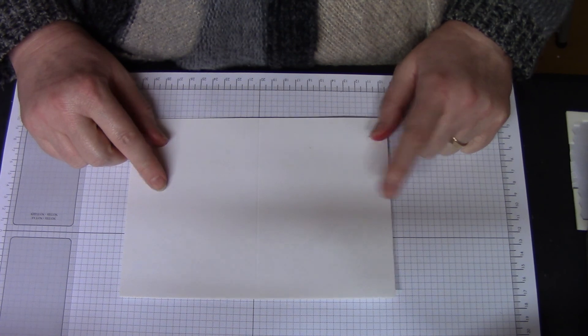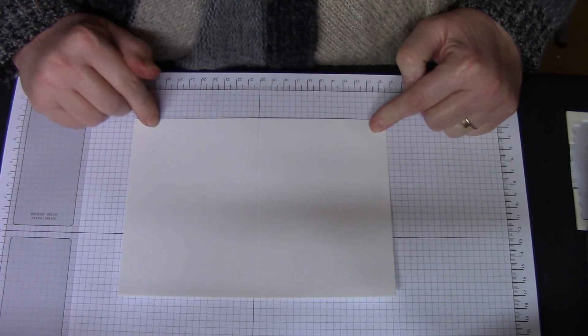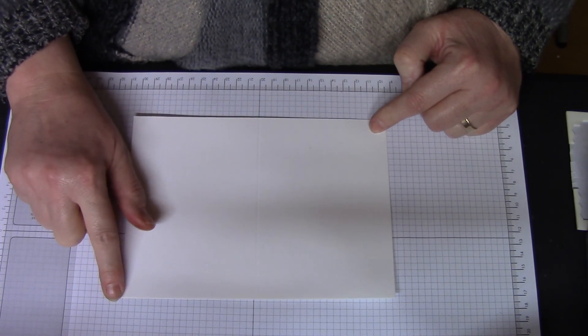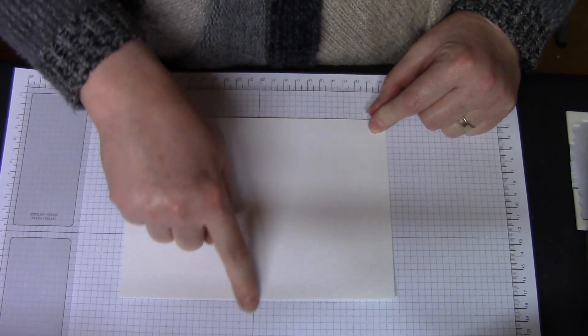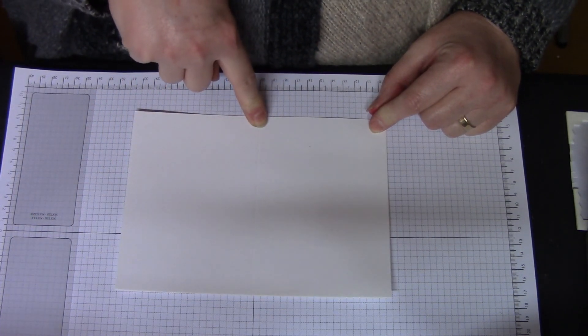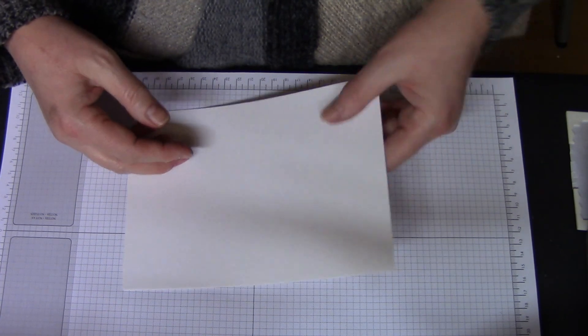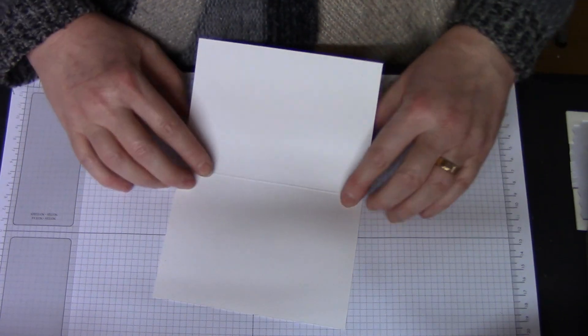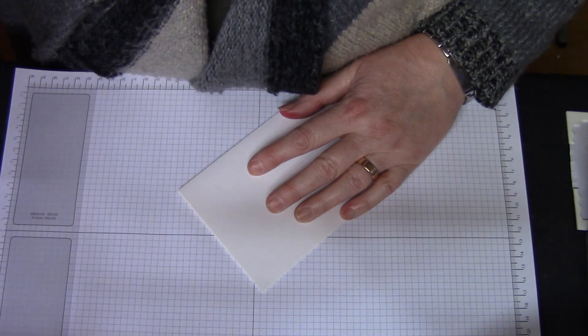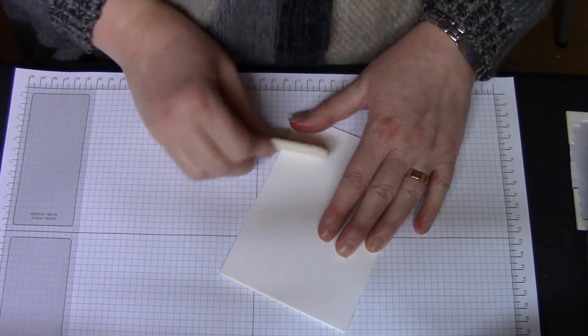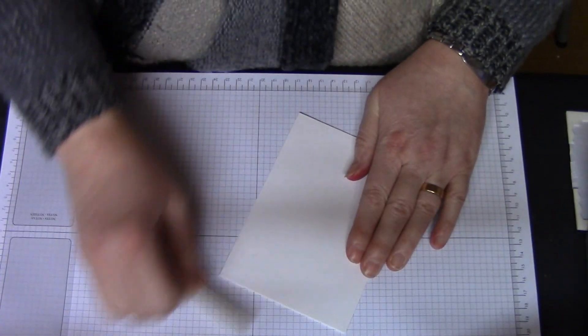Whisper White cardstock trimmed to 21cm by 14.8cm, scored through the center of that long side at 10.5cm, fold so that ridge is inside your card and then burnish with your bone folder so that's a nice fold.